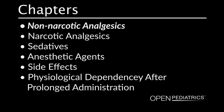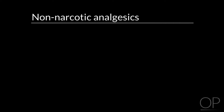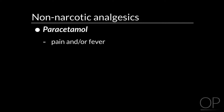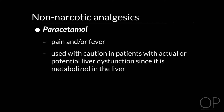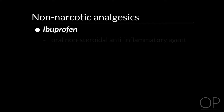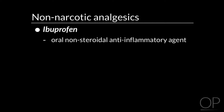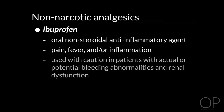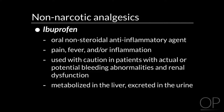Non-narcotic analgesics. There are many options for pain control that do not involve narcotics. Paracetamol is indicated for pain and/or fever. It should be used with caution in patients with actual or potential liver dysfunction, since it is metabolized in the liver. Ibuprofen is an oral non-steroidal anti-inflammatory agent indicated for pain, fever, and/or inflammation. It should be used with caution in patients with actual or potential bleeding abnormalities and renal dysfunction. It is metabolized in the liver and excreted in the urine.